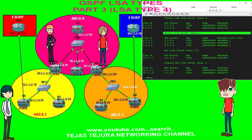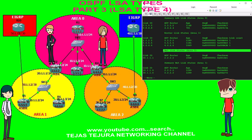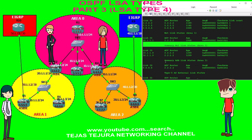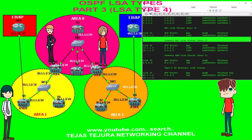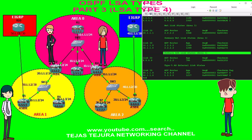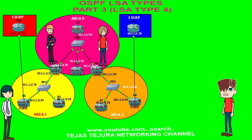Same, we check on area 1. This is LSA type 4 of area 1. This is how we can verify it via command line.